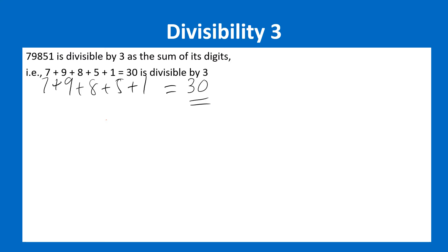So the number 79,851 is divisible by 3. We all know divisibility by 3: the sum of the digits must be divisible by 3. Divisibility by 3 means the sum of the digits is divisible by 3.